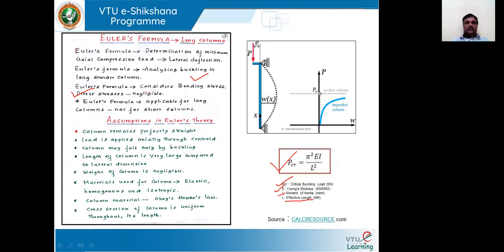Euler's formula is applicable for long columns only, not for short columns. Assumptions made in deriving Euler's equation include: columns remain perfectly straight and rigid; load is applied axially through the centroid only; the column may fail only due to buckling, not due to compressive stresses; the length of the column is very large compared to the lateral dimensions; the weight of the column is negligible; the material is perfectly elastic, homogeneous, and isotropic, obeying Hooke's law; and the cross section of the column is uniform throughout its length.